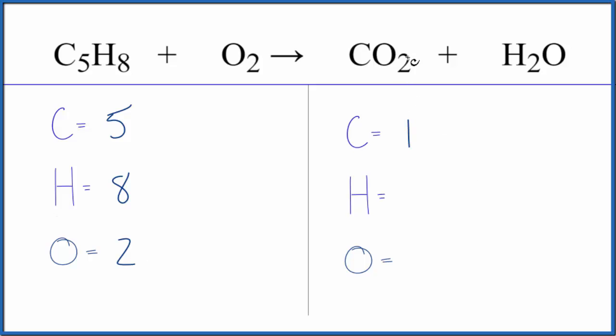Product side, we have one carbon, two of these oxygens here, but don't forget this one here. So we have three oxygen atoms, and hydrogens we just have the two. So we've counted our atoms up, now we can balance the equation.